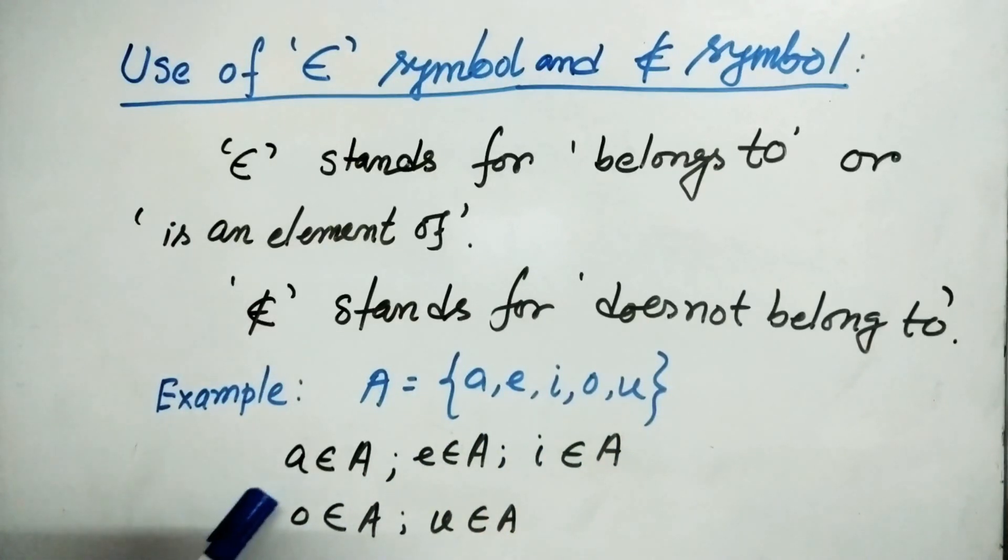Now we can say that A belongs to A. E belongs to A. I belongs to A. O belongs to A. And U belongs to A. Whereas we can say that B does not belong to A, D does not belong to A, K does not belong to A. And there are so many alphabets which do not belong to A.